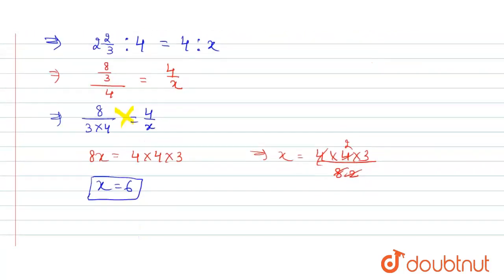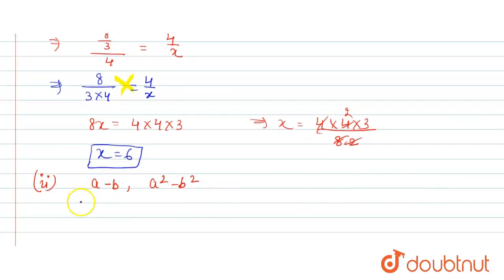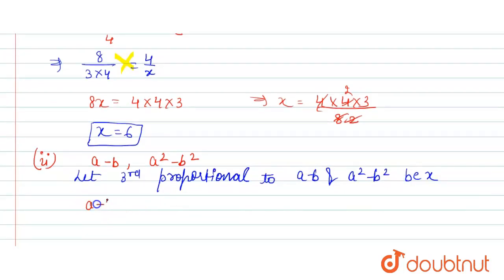Now the second part is a minus b and a squared minus b squared. Let the third proportional to a minus b and a squared minus b squared be x. This means a minus b, a squared minus b squared, and x are in continued proportional.